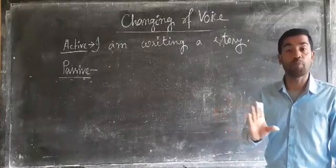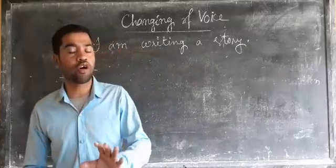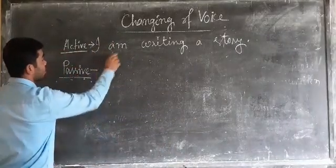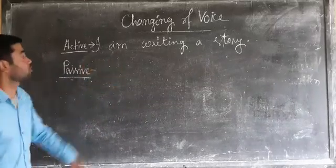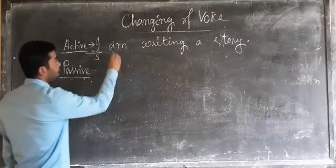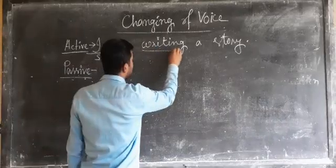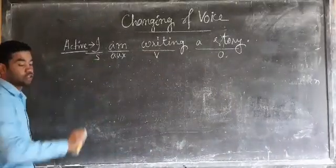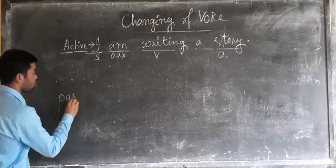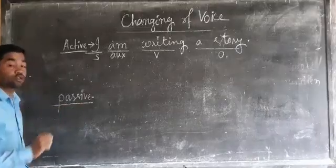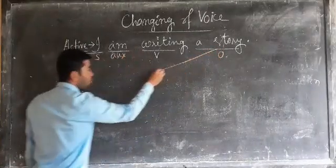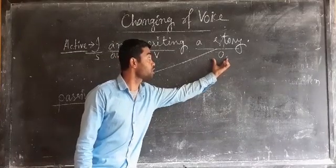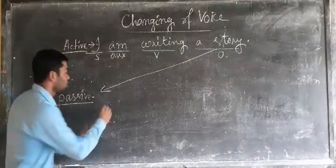In the sentence 'I am writing a story,' we find the parts: 'I' is the subject, 'am' is the auxiliary, 'writing' is the verb, and 'a story' is the object. While converting to passive, the first procedure: the object of active voice will be the subject of passive voice. So 'a story,' which is the object here, we have to convert it to the subject of the passive voice. So: 'A story...'